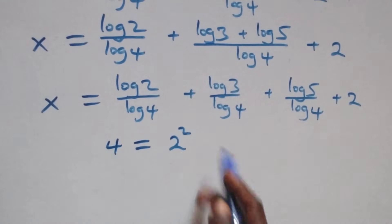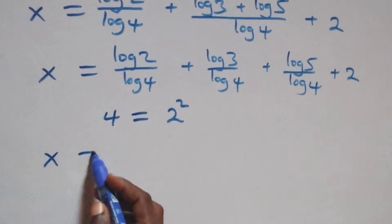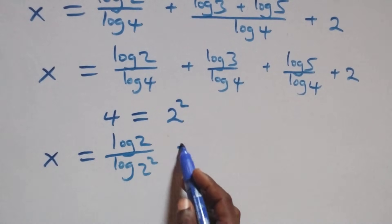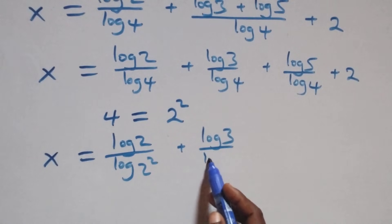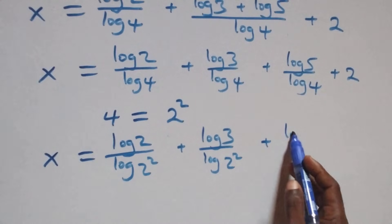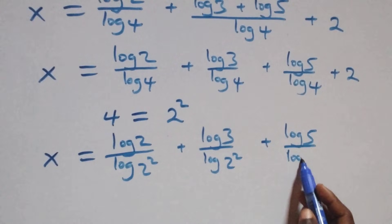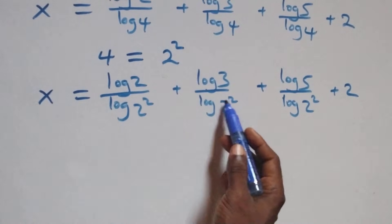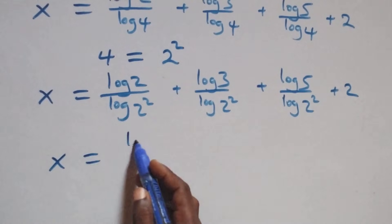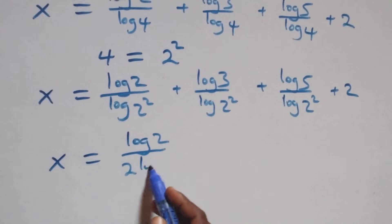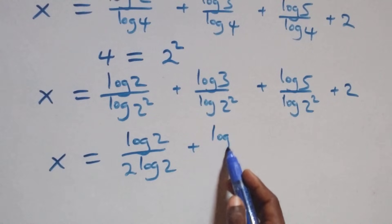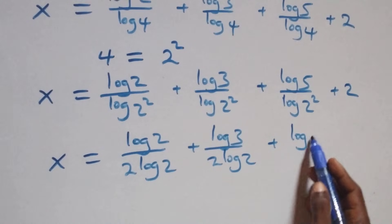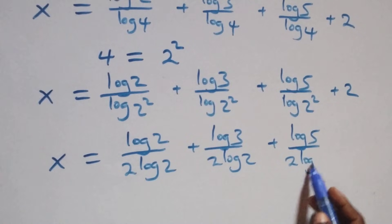We rewrite 4 as 2 times 2, which is 2 squared. So we have x equals log 2 over log 2 squared plus log 3 over log 2 squared plus log 5 over log 2 squared plus 2. Applying the power rule to the denominator, log 2 squared becomes 2 log 2.